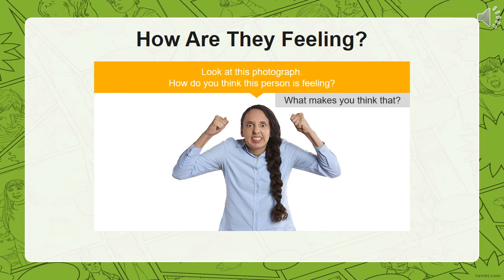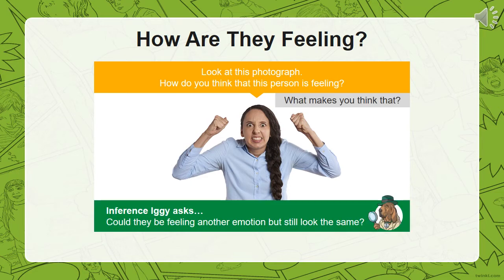Today we're going to try and use 'show don't tell' — this is showing how characters feel. Look at this photograph. How do you think this person is feeling, and what makes you think that? I think this person is feeling angry. Now we can use inference — could they be feeling another emotion but still look the same? What do you think?